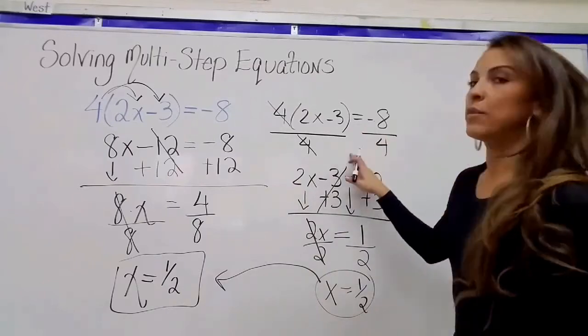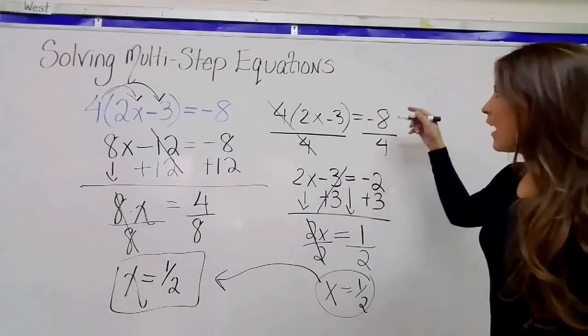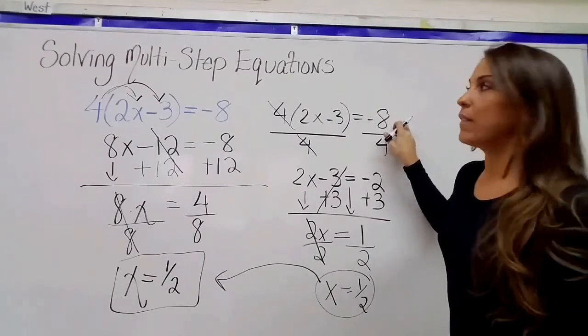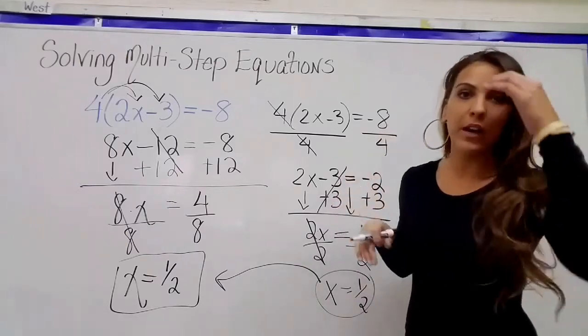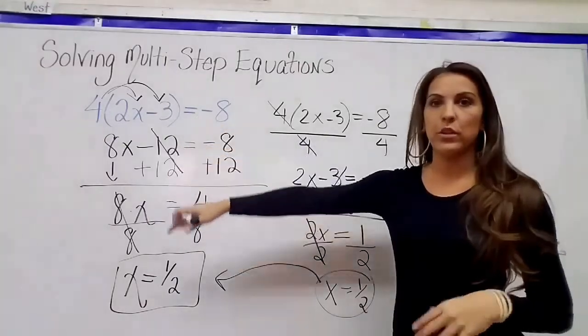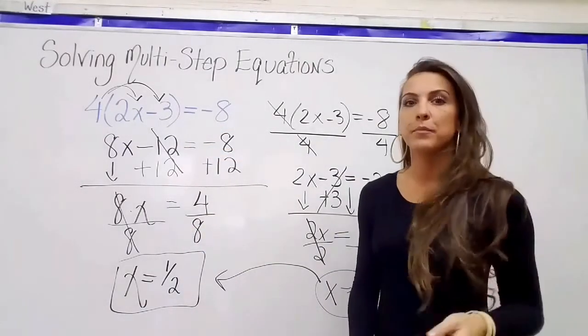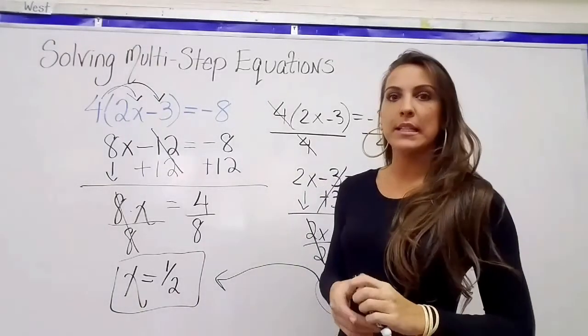The only issue with dividing by the number that's being distributed first is that if on the right side, this is not a number that 4 can go into nicely, then you're going to have to be dealing with fractions again. So as a rule of thumb, if you're not great with fractions yet, you might want to just distribute first. But either way, you do get the same answer. So this is how to use the distributive property when you're solving multi-step equations.